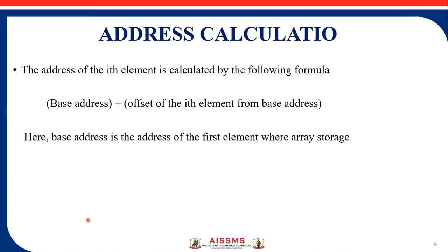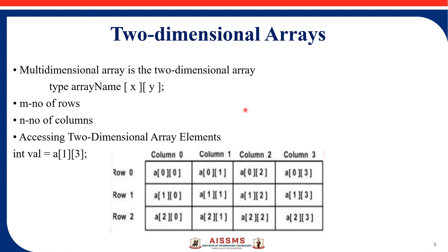For address calculation at a particular index, there is a specific formula. The address of the i-th element is calculated as: base address plus the offset of the i-th element from the base address. For example, if the base address is 1000 and we want A of 5, the address calculation gives 1000 plus the offset of the 5th element, resulting in address 1010.